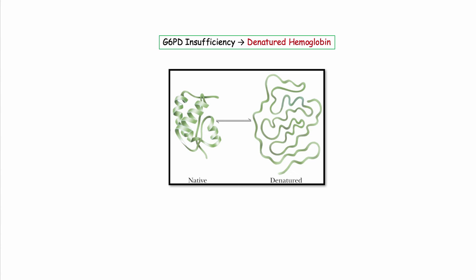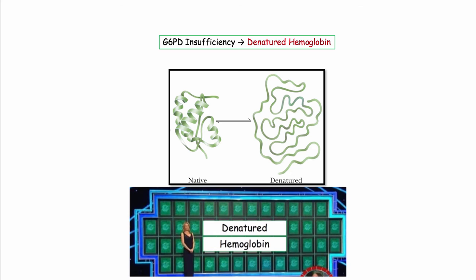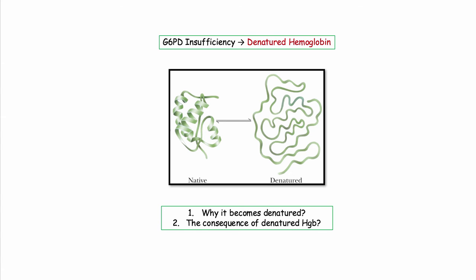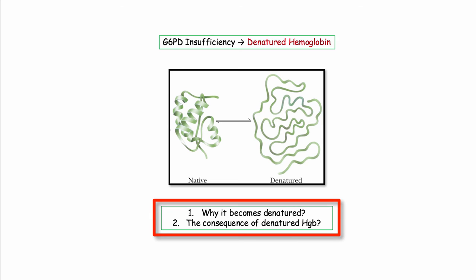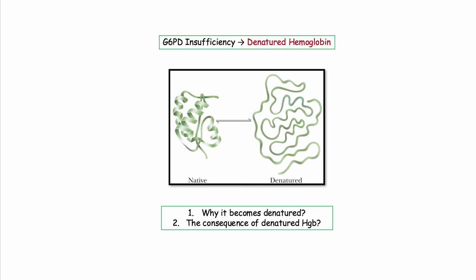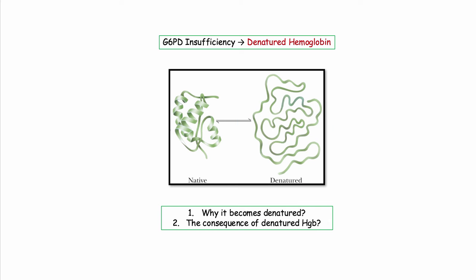I can summarize this entire topic in a single word: denatured hemoglobin. If you can understand why hemoglobin becomes denatured and the consequence of this abnormal denatured hemoglobin, you understand G6PD deficiency. With the concept of denatured hemoglobin in mind, my mind floods with all the key Step 1 materials you will need to know.